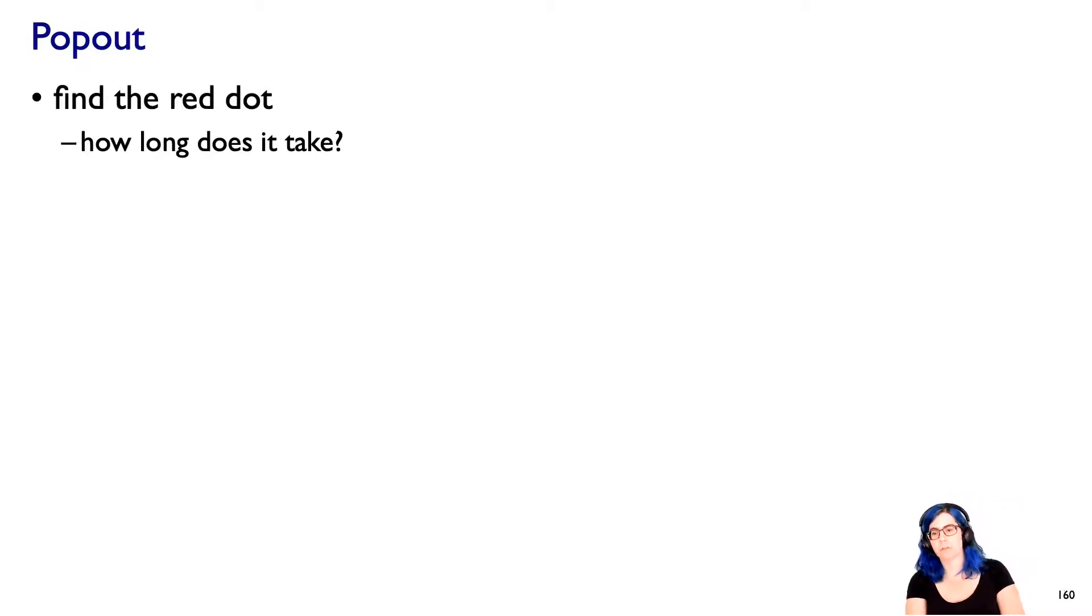Okay. Let's talk about popout. Sometimes this is called pre-attentive processing, but this is a phenomenon that's not about you needing to pay attention. So let's try it out. You're going to do something simple. We're going to do it together since we're on video. We're going to find a red dot and let's think about how long it takes. So I'm going to say go, and then as you're watching this, I literally want you to say out loud, got it, as soon as you see it. So let's try it. I'll be your proxy. One, two, three, go. Got it. Okay. Saw a red dot.